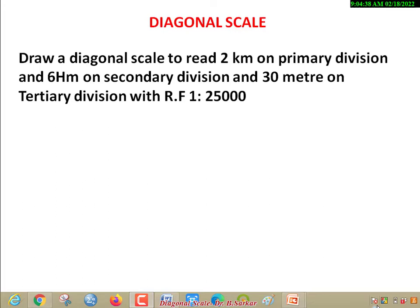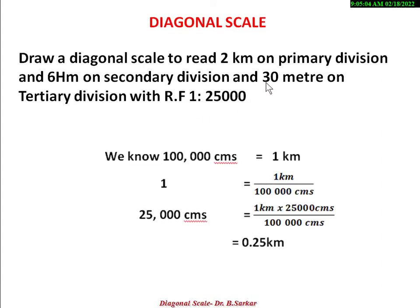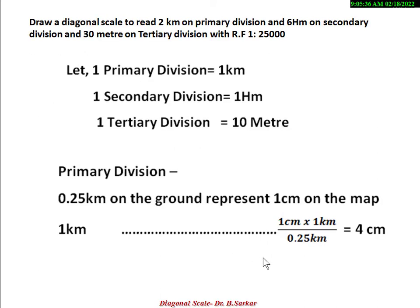Now we are going to discuss the calculation part. The problem is: draw a diagonal scale to represent 2 km on primary division, 6 hectometer on secondary division, and 30 meter on tertiary division with RF 1 is to 25,000. At first we need to convert the scale. Here RF is 1 is to 25,000 and primary division unit is kilometer, so we need to convert our scale into kilometers. 1 lakh centimeter equals 1 kilometer, so 25,000 centimeter equals 0.25 kilometer.